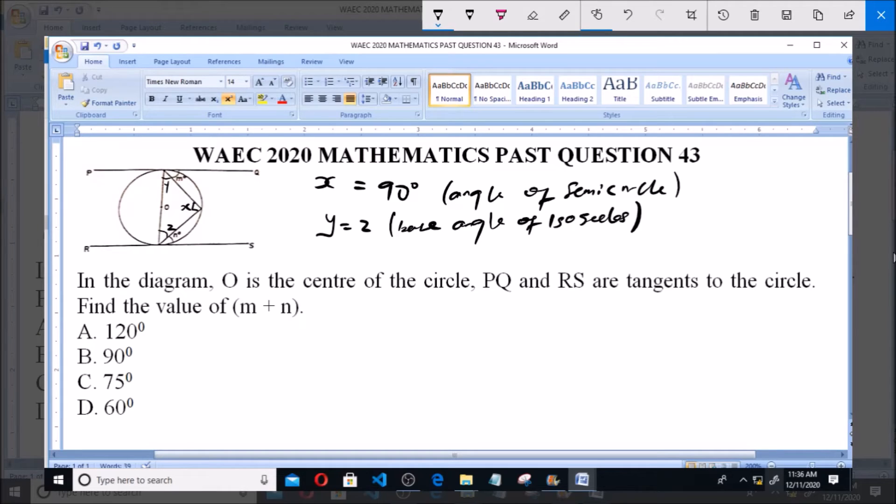Now, since X equals 90, we have that X plus Y plus Z equals 180 degrees. Since Y and Z are equal, we can say 2Y plus X equals 180. So 2Y plus 90 equals 180.